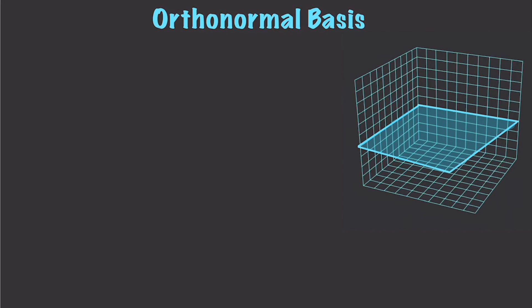Just to draw this out so you can see: we have a vector like this, we have another vector that's perpendicular, and then we're going to have another vector that goes up like that. So that is what I'm referring to when I talk about orthonormal basis. Let's go and work through an example — like always, that makes it much easier.